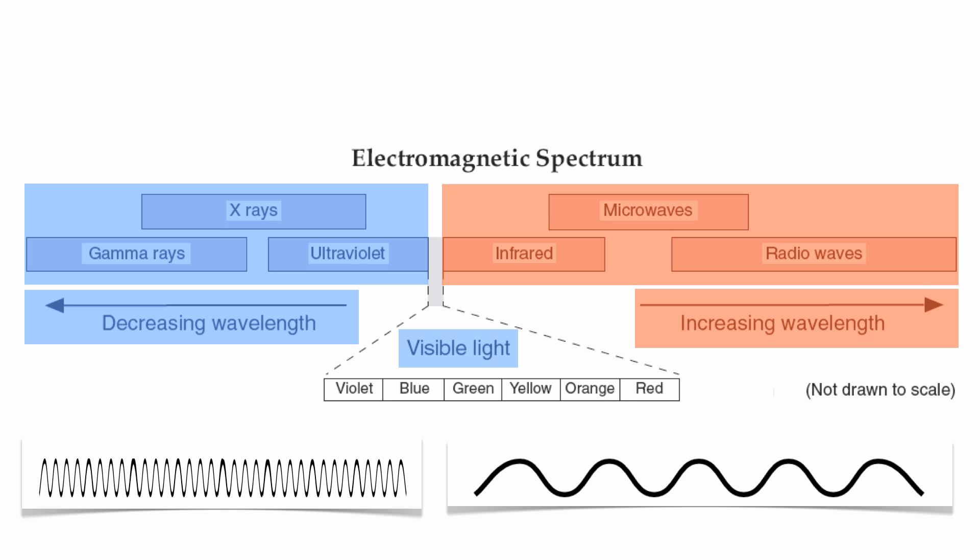Right in the middle is your visible light. Visible light is actually categorized as a short wavelength. It's in the decreasing wavelength. Your visible light, due to the fact that it's the only wave that we can actually detect with our eyes—how do we know? We can see colors.